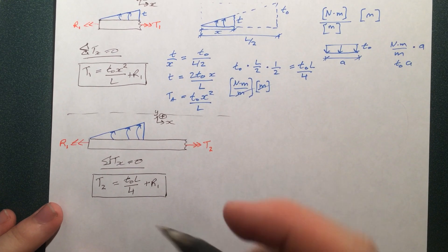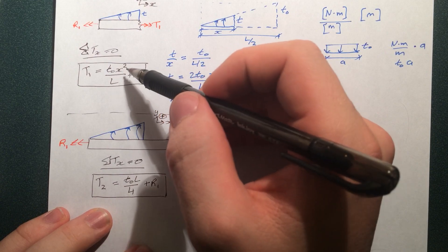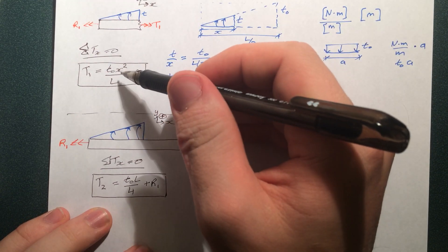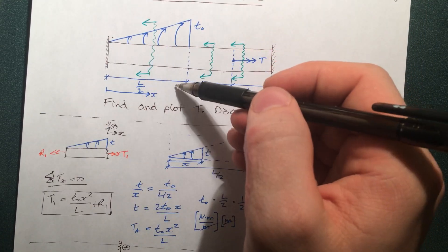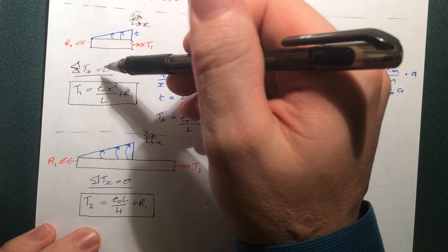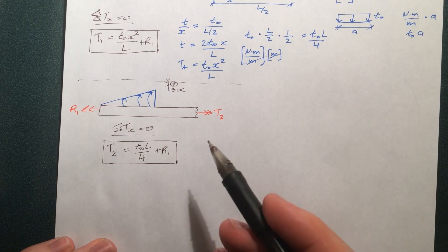Now check the similarities between this one here. This one described it at a certain point, and this one describes it after that point. So if we go to the full extent of where this bit is applied, that's going to be L by 2. So you substitute L by 2 into here, and you get T0L by 4 plus R1. So that tells us we're on the right track here for T2.